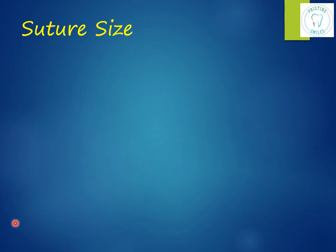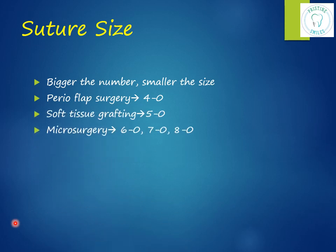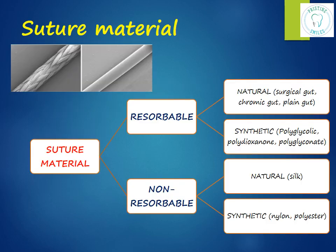Regarding suture sizes: the bigger the number, the smaller the size — size relates to the diameter of the thread. In oral mucosa we usually use three-zero; for periodontal flap surgeries, four-zero. These are large enough to allow easier knot tying with a needle holder. For soft tissue grafting, five-zero is used. In microsurgery, six-zero, seven-zero, or eight-zero are used because a thinner thread is needed. Fine sutures like six-zero may also be used on the face as they cause less scarring.